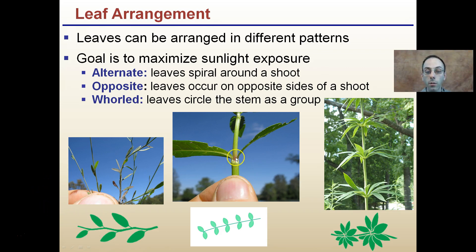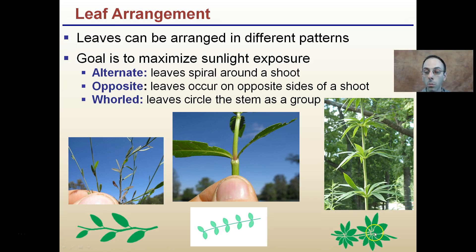Opposite occurs on opposite sides of the shoot — we have leaves going in opposite directions, one to the left and one to the right, originating at the same central node. We also have whorled, which is quite interesting: leaves that circle around the stem as a group. These are three different types of leaf arrangements.